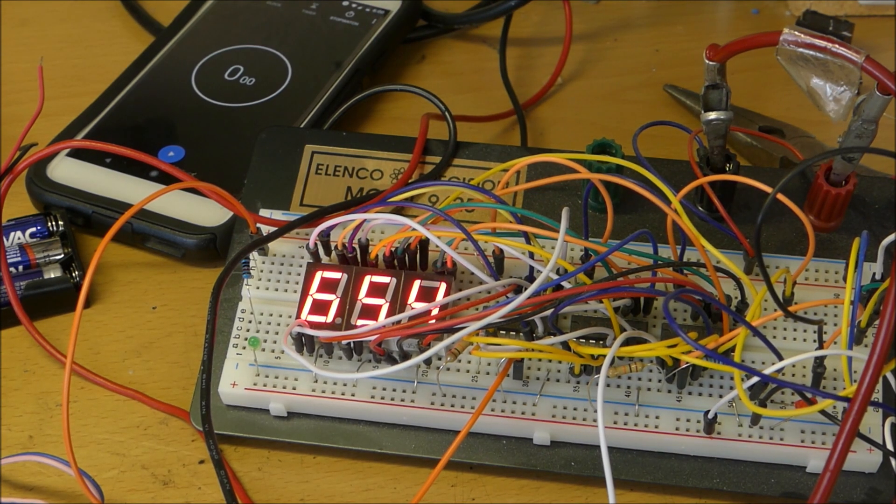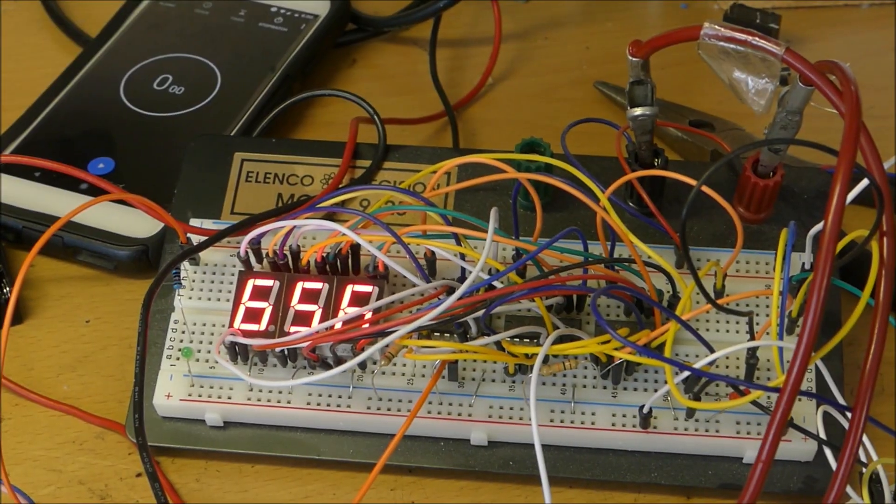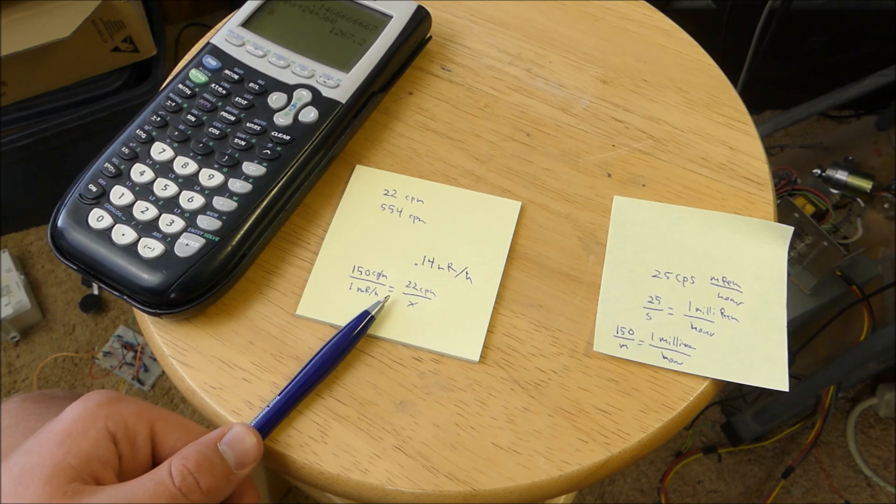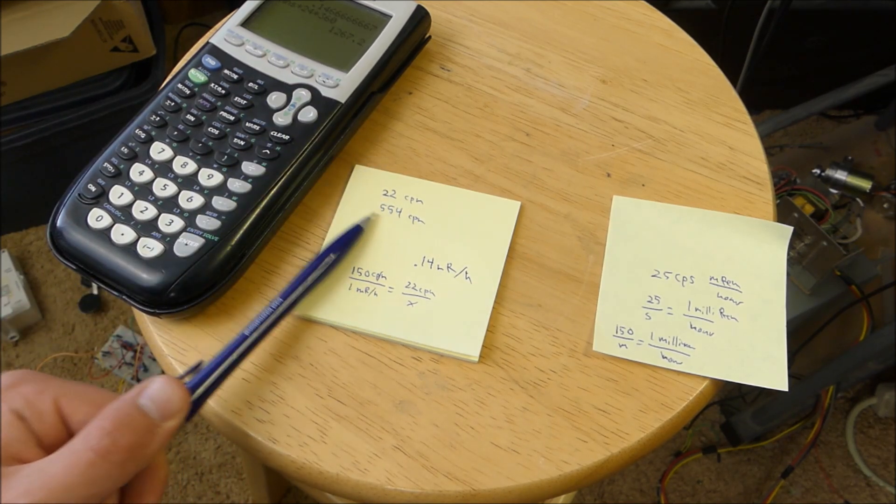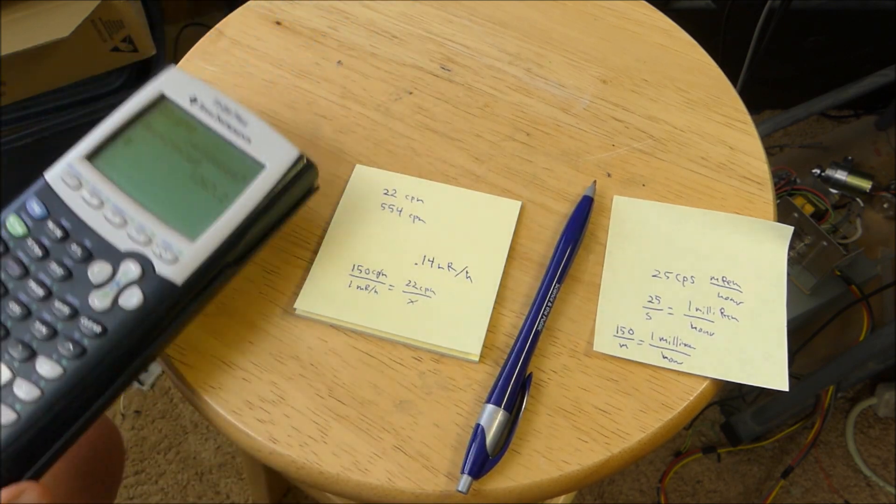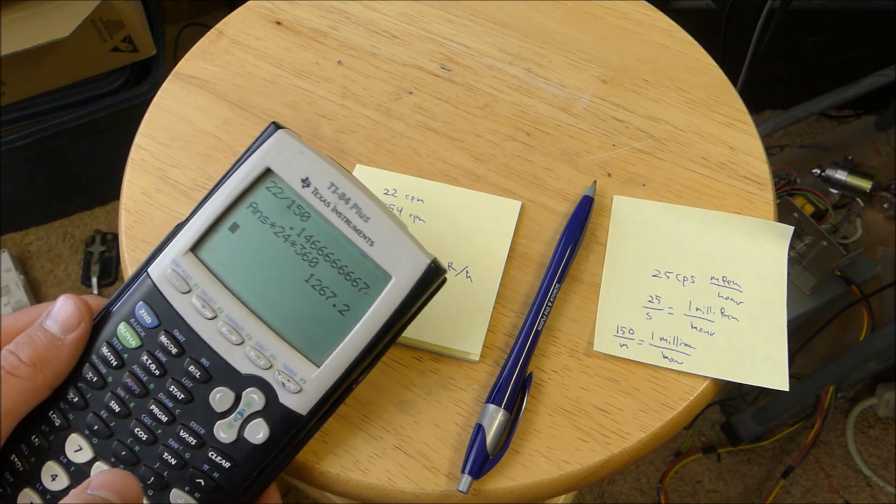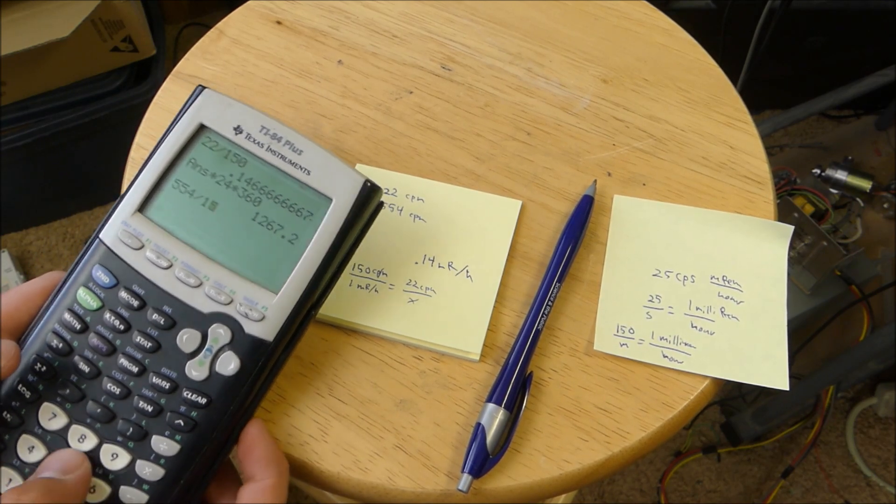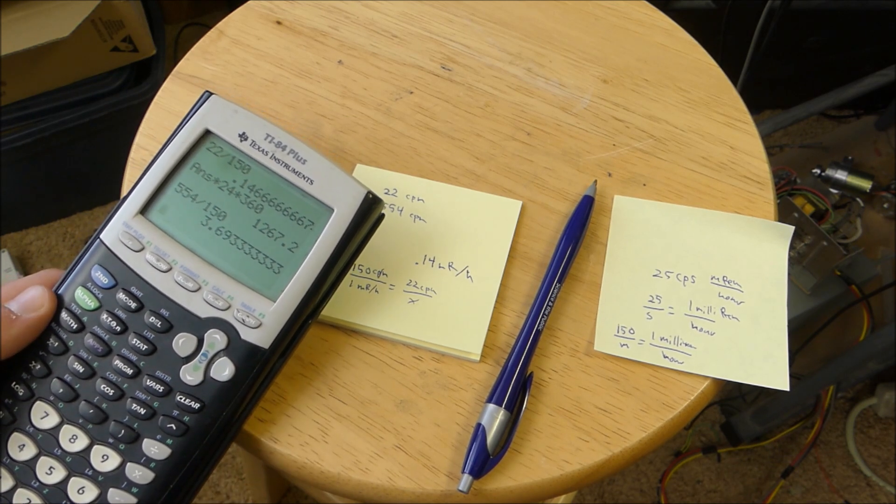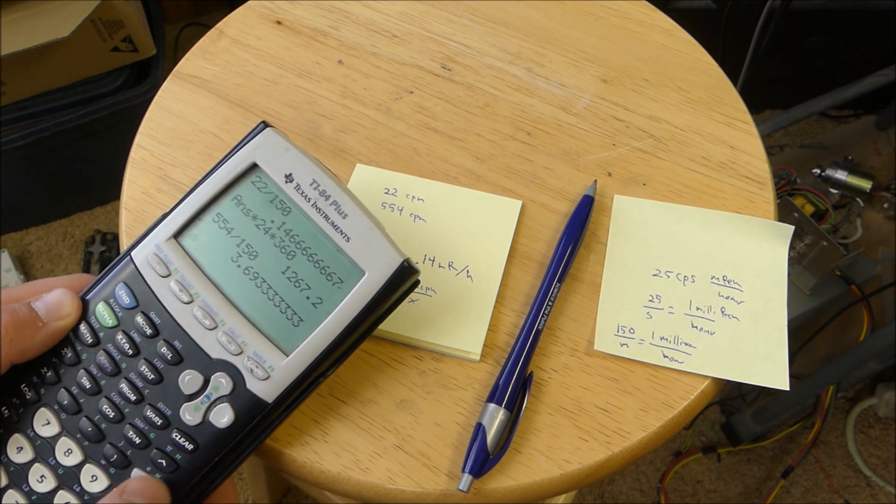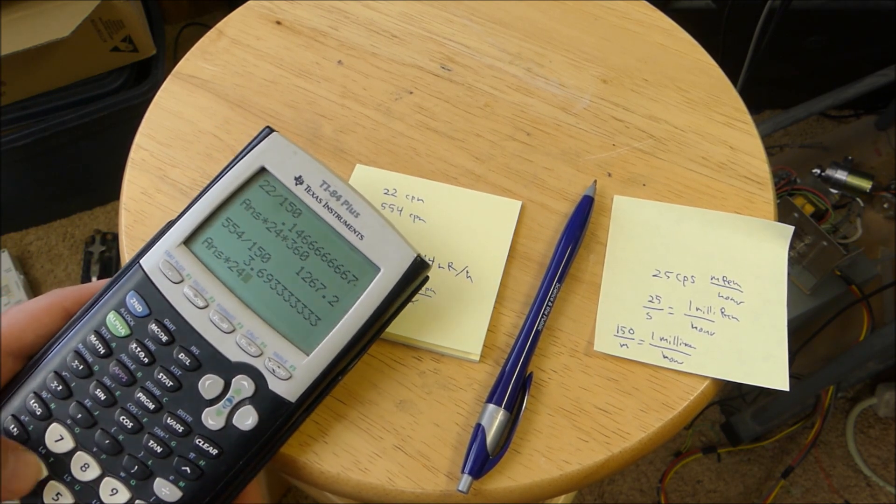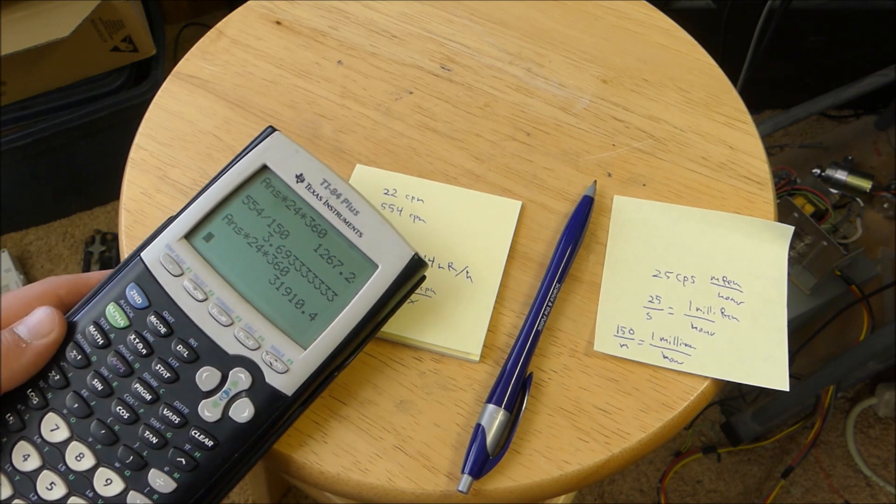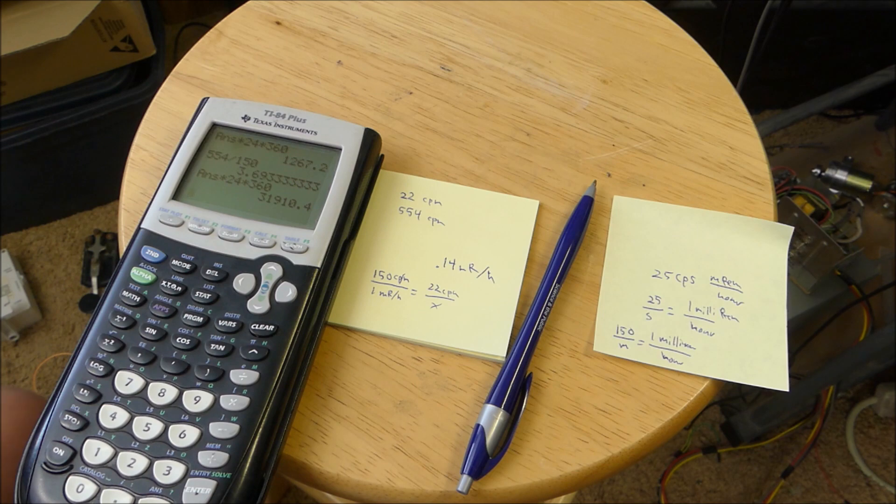Approximately. Let me look at the footage. Alright, so we calculated before. We had 22 counts per minute. And that was about 2 times the national average of radiation exposure for people. When I put the americium next to the Geiger tube, we got 554 counts per minute. So let's calculate the millirems per hour for that. So we can go in here and we can do 554 divided by 150. So that's 3.69 millirems per hour. If we multiply that by 24 and 360, we'll get our yearly exposure if I was right next to that americium source. Holy crap. 31,000 millirems per year. I wonder what that is.